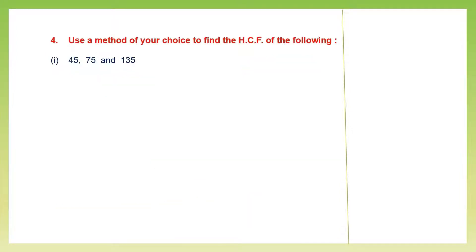Question 4: use a method of your choice to find the HCF. We've learned three methods — the common factor method, the prime factor method, and the long division method. You can use any one. Generally when you have bigger numbers, especially like 135 here, it's always easier to use the long division method. So let's use the division method.